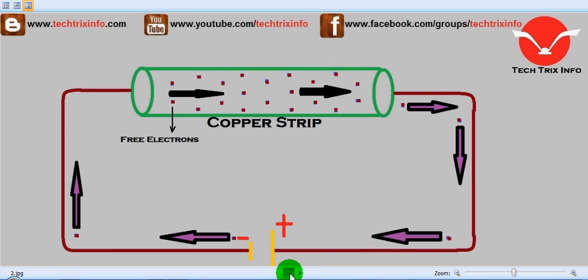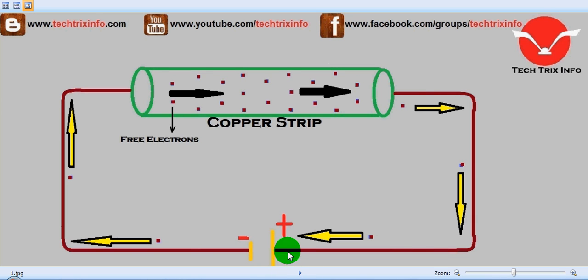With the help of this animation, here we have a copper strip. The copper strip has many free electrons. You can see these red colored dots which indicate the free electrons. These free electrons are actually negatively charged, and this circuit is closed and connected.